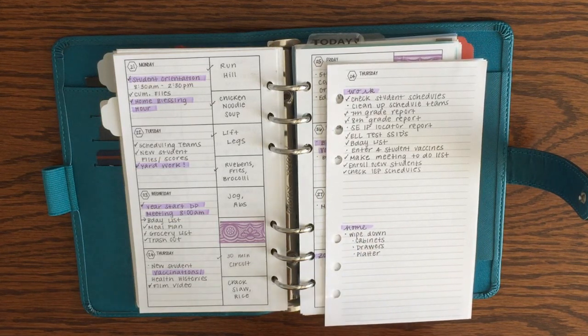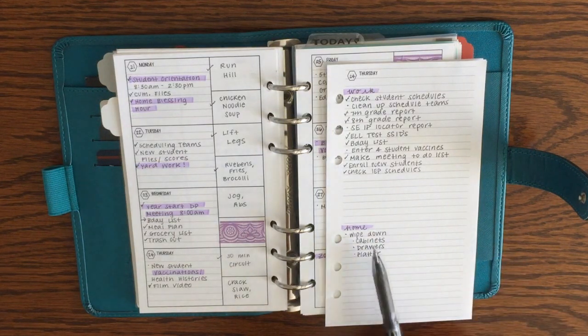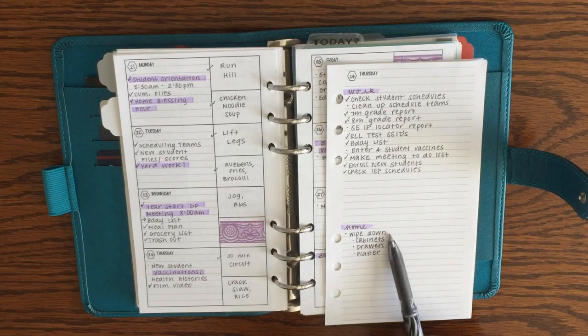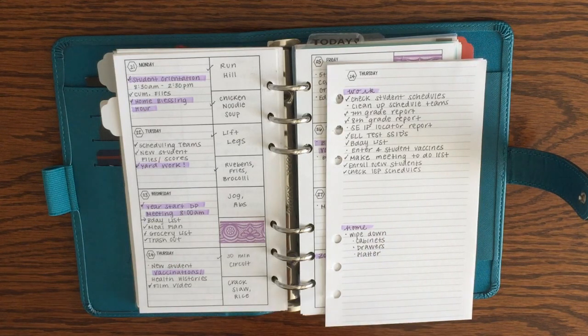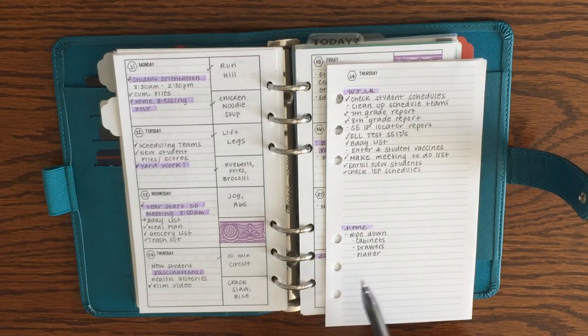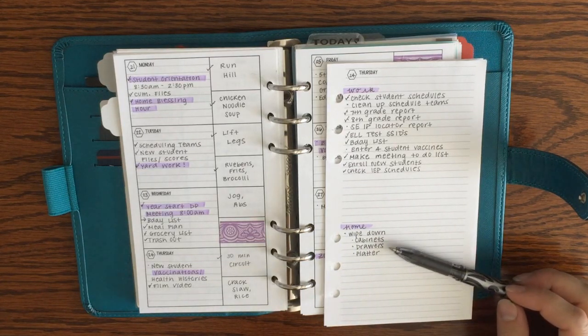These tasks over here that I still have uncompleted on my home part of my daily page, those are tasks that kind of go with my Fly Lady system. These are my tasks that I wanted to do for my zone cleaning. My zone this week is the master bedroom and the master bathroom.